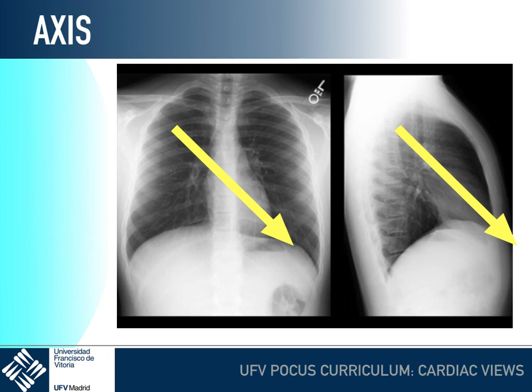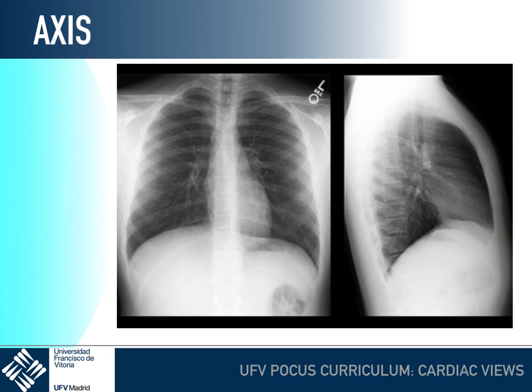Remember that the right side of the heart is slightly anterior and the left side of the heart is slightly posterior. We also need to remember that the atria are superior, more oriented to the base of the heart, and that both ventricles are more at the apex, which means inferior.